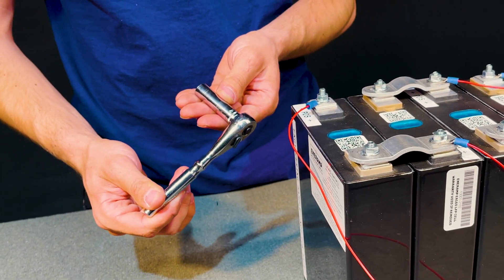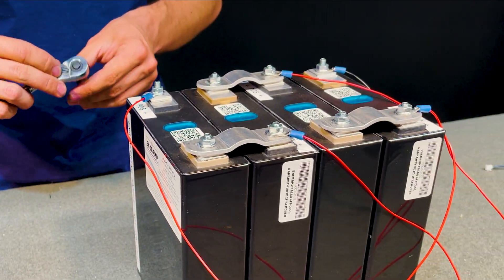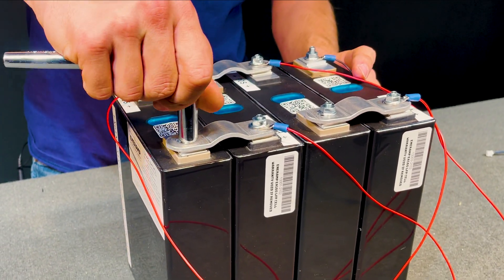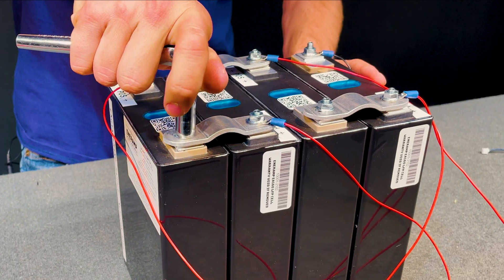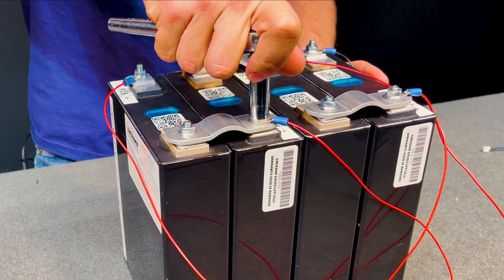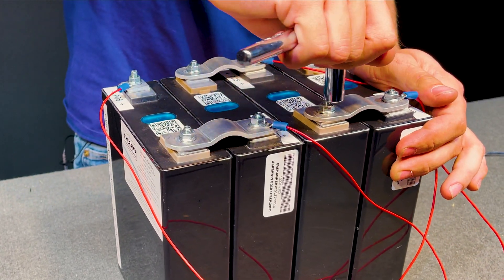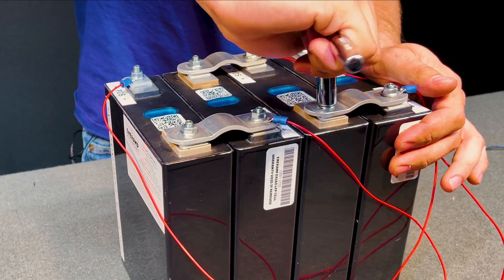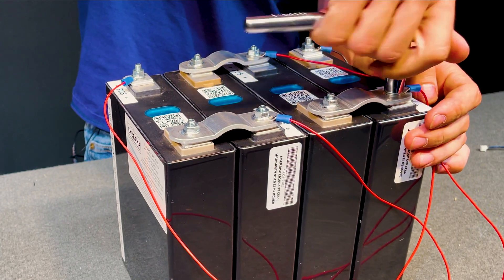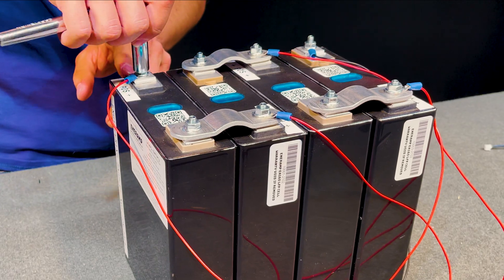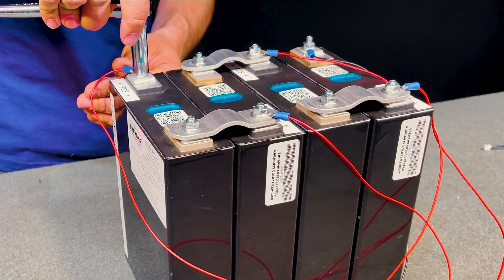Now using our 10 millimeter socket and quarter inch drive ratchet we can tighten down some of these terminals. I'm going to tighten down everything except for the main positive and main negative terminals. Ideally you would be using a torque wrench for this and meeting the torque specs of the batteries you are using. And we're going to get a little bit of snug tightening on the main terminals but not too much.